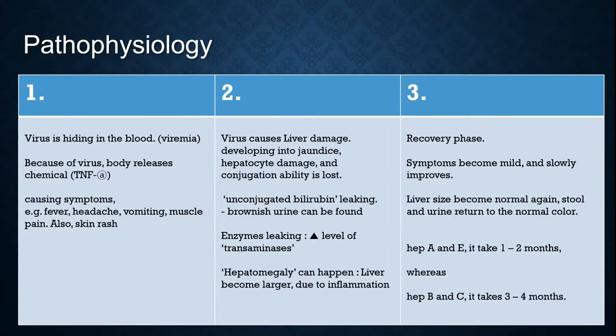Let's look at the pathophysiology. Firstly, the virus is present in the blood — this is called viremia. Because of the virus, the body releases the chemical TNF-alpha, which causes symptoms like fever, headache, vomiting, muscle pain, and skin rash.